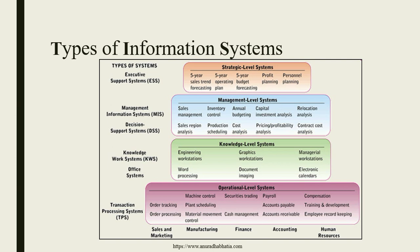After Knowledge Work Systems, we have the Decision Support System at the third level — this is the management level where Management Information Systems come into picture. Here you have sales management, region analysis, inventory control, budgeting, and capital investment analysis. A real-world example of capital investment analysis is the share market, where a lot of analysis through MIS helps an organization grow.